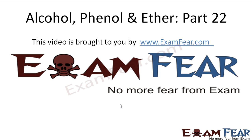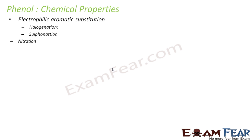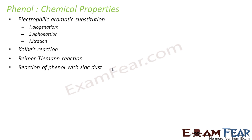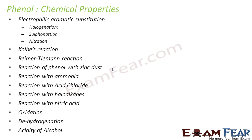Hello friends, this video on alcohol, phenol, and ether part 22 is brought to you by examphia.com. Let's understand some chemical properties of phenols. We'll cover electrophilic aromatic substitution including halogenation, sulfonation, and nitration. We'll also discuss the Kolbe reaction, Reimer-Tiemann reaction, reaction of phenol with zinc dust, ammonia, acid chloride, haloalkanes, nitric acid, oxidation, dehydrogenation, and acidity of phenol.